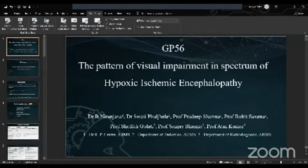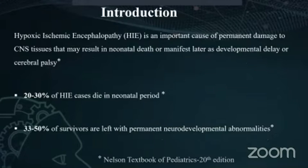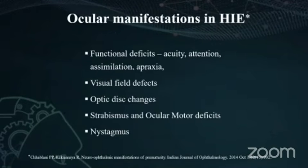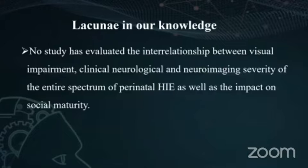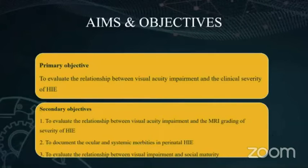I extend my sincere thanks to my professors. HIE is an important cause of permanent damage to neural tissues resulting in neonatal mortality or manifest with permanent neurodevelopmental abnormalities. On a detailed literature review, we found that there is no study so far which has evaluated the interrelationship between visual impairment, clinical neurological severity, neuroimaging severity, the entire spectrum of perinatal HIE, and the impact of visual impairment on the social development of these children. Hence, we arrived at the objective: to evaluate the relationship between visual acuity and the clinical severity of HIE.